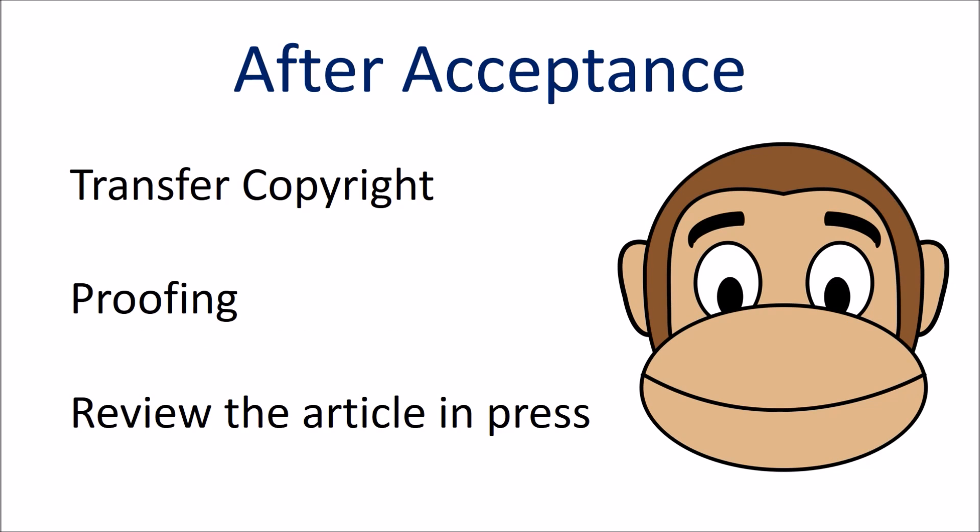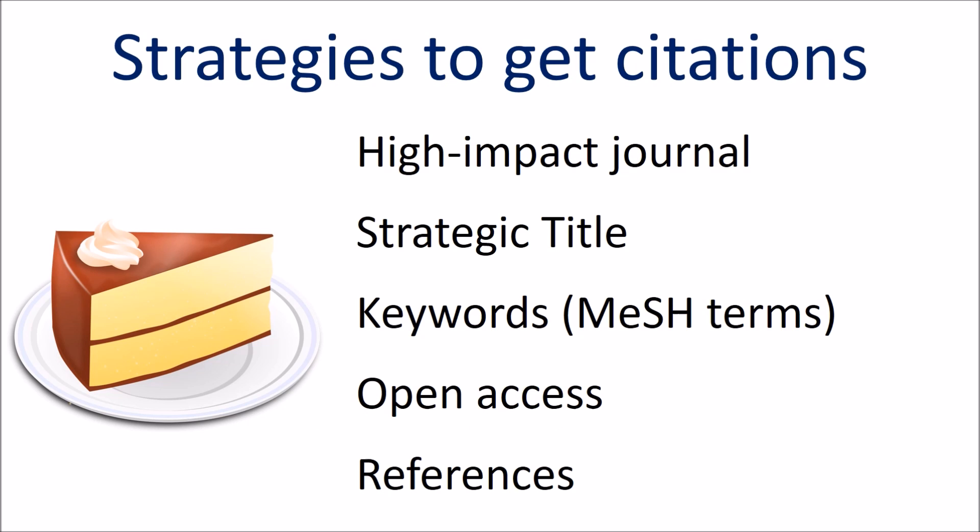After you get an acceptance, you typically transfer the copyright to the journal. Proofers will then review your article for spelling and grammatical changes, and you receive a proof with suggested changes and write your responses. Your article will first be put online as an article in press — make sure it is correct before it is officially published. This final check is not required, but it is good to do. Remember, you are responsible for the accuracy of the article. If it is incorrect, an erratum may need to be published, or sometimes a retraction.